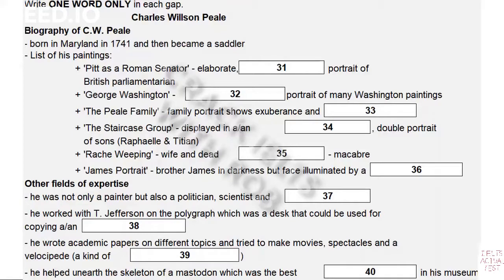It's a rather macabre portrait of his first wife crying over the death of one of their children, their daughter Margaret. I'd like to show you one more slide to demonstrate his innovative approach. This is a portrait of his brother James, sitting at his desk at night, with only his face illuminated by a lamp. This was painted much later than the others, in 1822.